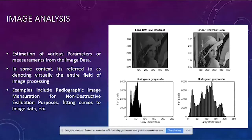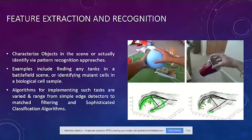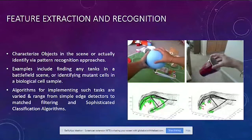Feature extraction is helpful in categorizing objects in an image using pattern recognition approaches. Applications include finding a tank in a battlefield scene, finding the number of faces in an image, or identifying a mutant cell in a biological cell sample. Certain algorithms implement this — not limited to simple edge detections but also including matched filtering and sophisticated classification algorithms.